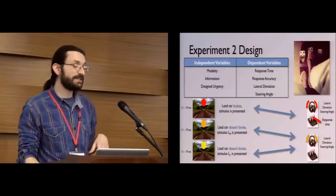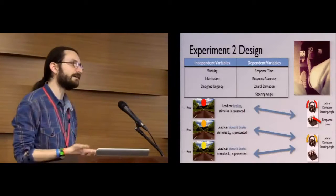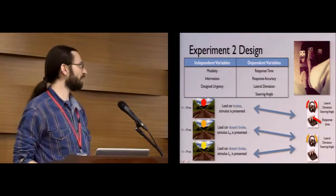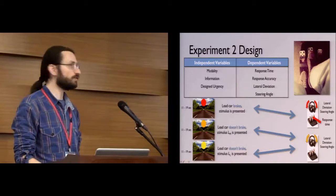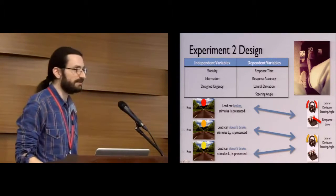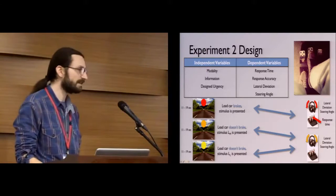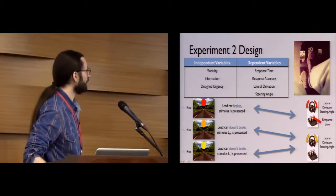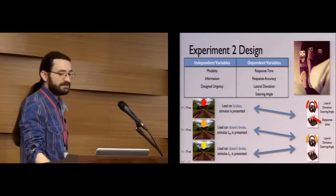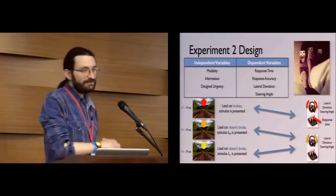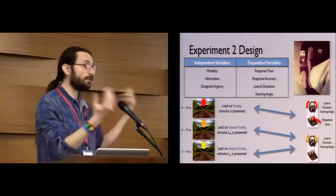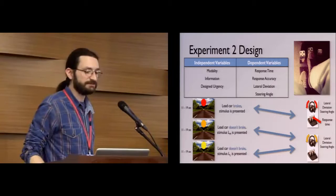The second experiment looked at a task of higher criticality. There was an event happening alongside cue presentation: the car in front braking toward the participant. When a high urgency cue was shown, the car braked toward the participant; for medium and low urgency cues, nothing happened and participants just needed to ignore the cues. We measured how quickly people stepped on the brake for the high urgency condition, and also measured driving metrics — specifically, how well people stayed centered in the lane, where lower deviation indicates higher attentiveness.